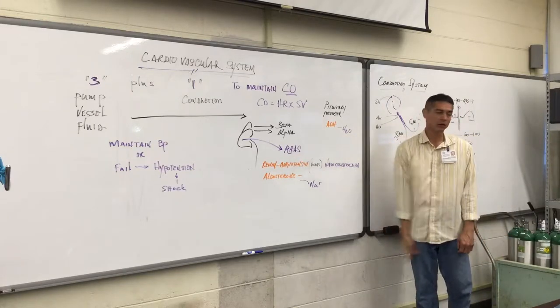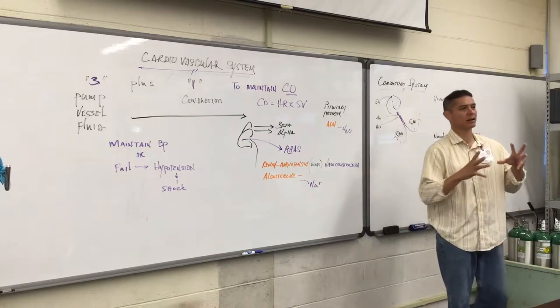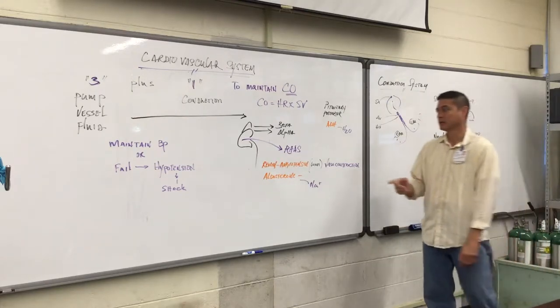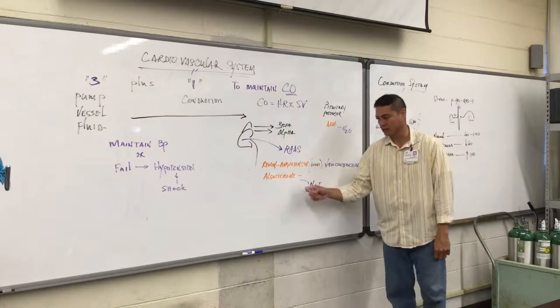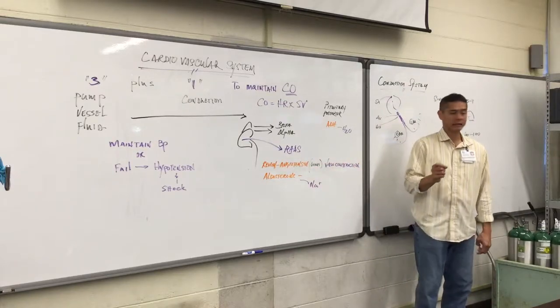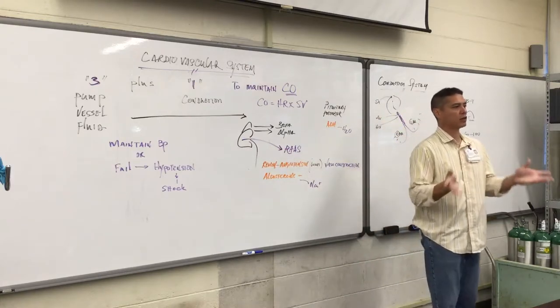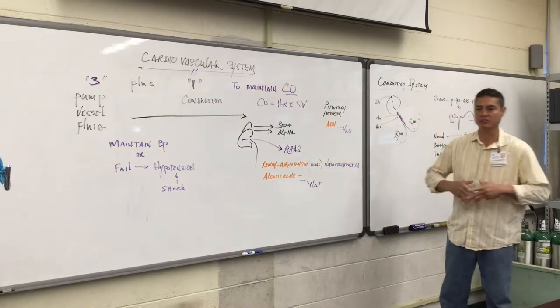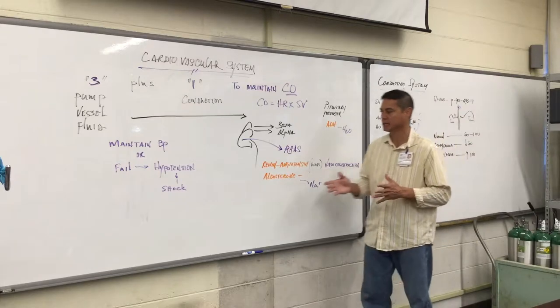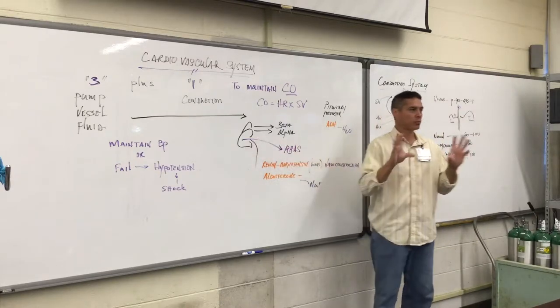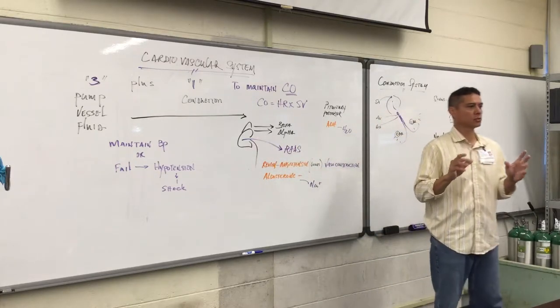We also learned that in order to maintain the cardiac output of blood circulating throughout the body, there's the renin-angiotensin-aldosterone system. The kidneys here, they have blood supplied to them right off the aorta, and when the blood supply to them is inadequate or diminishes slightly, they can sense this with receptors, pressure receptors.